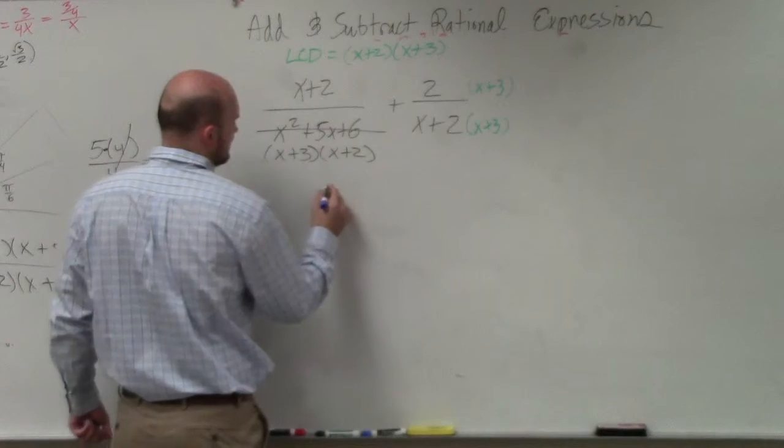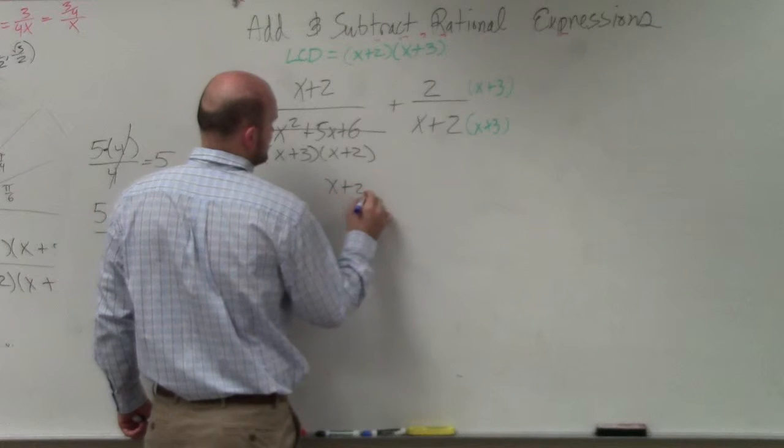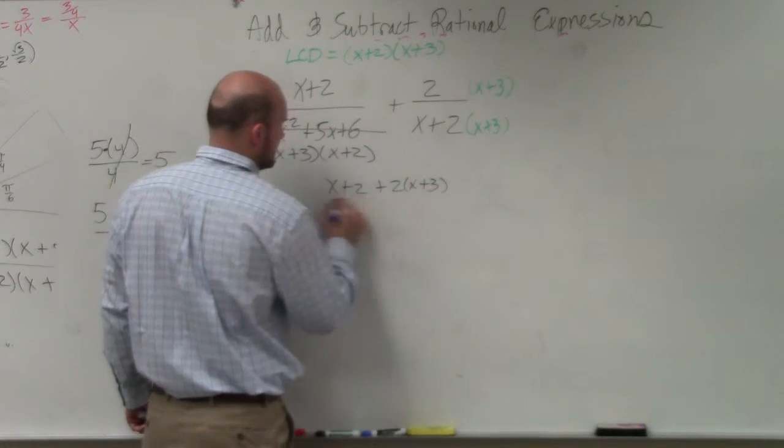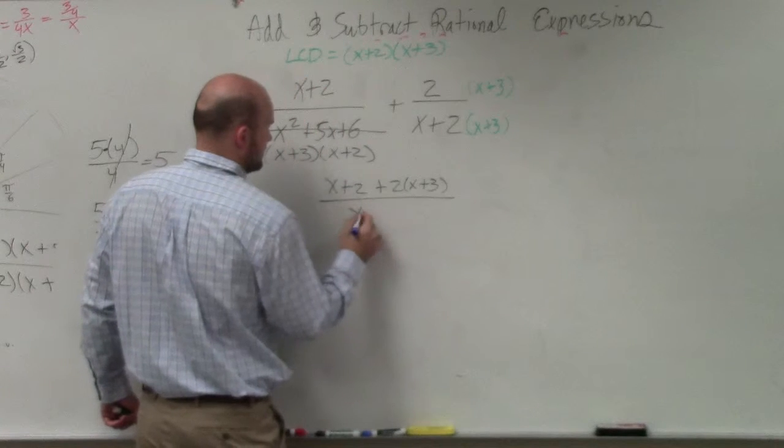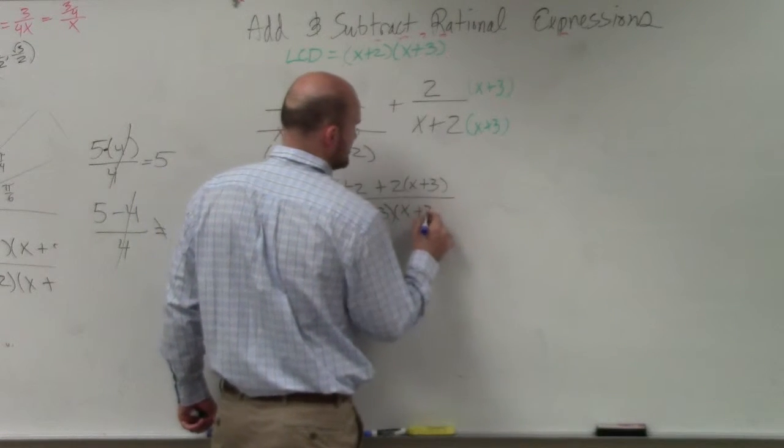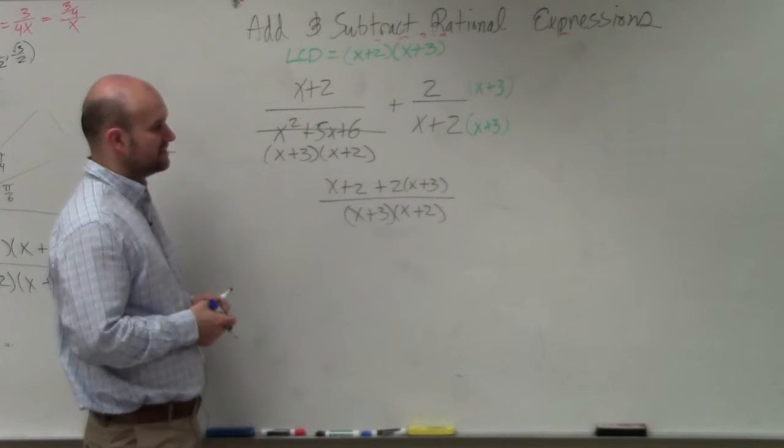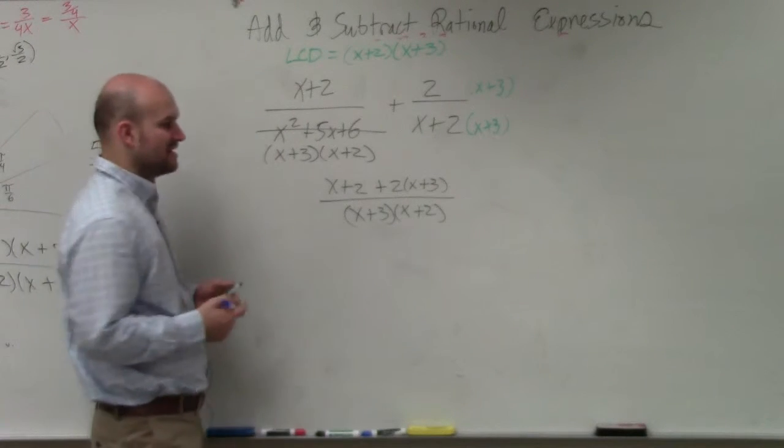So therefore, I have x plus 2 plus 2 times x plus 3, all divided by x plus 3 times x plus 2. I like to leave things factored out, because I think it's just easier to see and, of course, to divide things out.